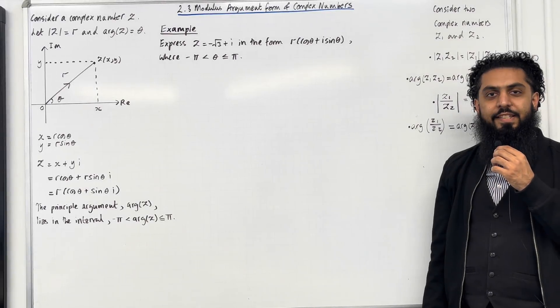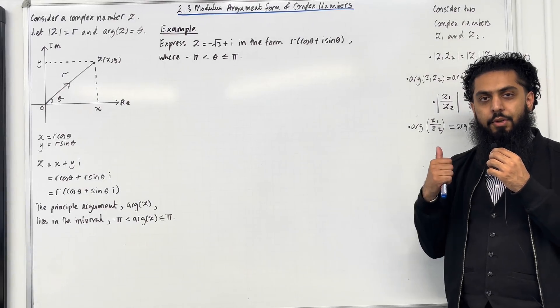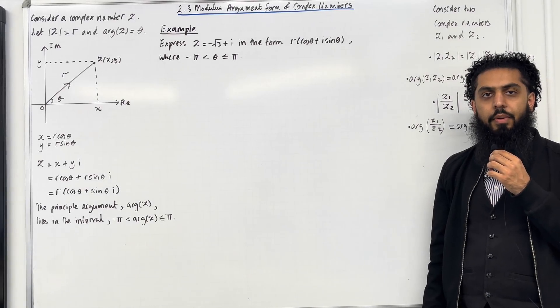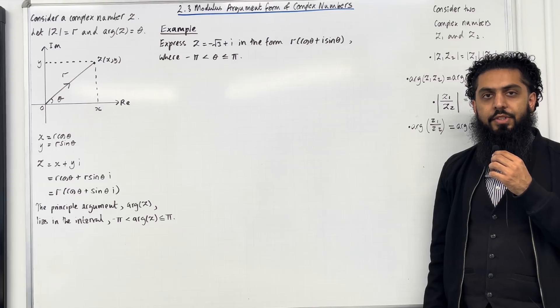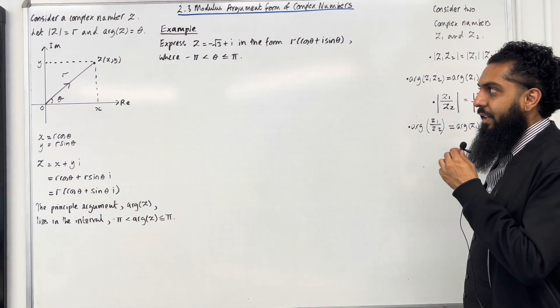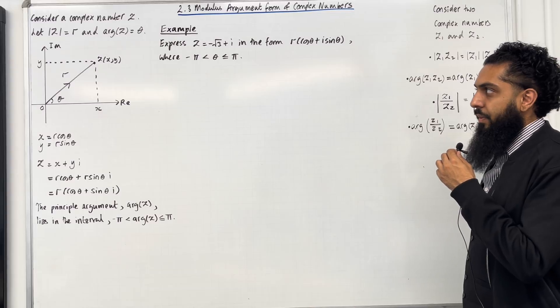Welcome back to DCT Media. I'll be looking at 2.3 Modulus Argument Form of Complex Numbers. 2.3 represents Chapter 2, Section 3 of the Core Pure 1 textbook. Let's have a look at the key facts of this section.